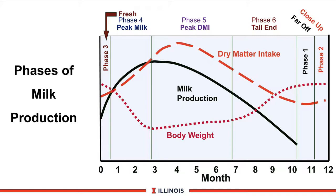Also, if we look at the new NRC, their tables indicate that first lactation heifers will peak several weeks later than later lactation cows. Therefore our strategies are trying to increase dry matter as quickly and as high as we can in early lactation to meet the nutrient requirements for high production and to initiate reproductive performance.